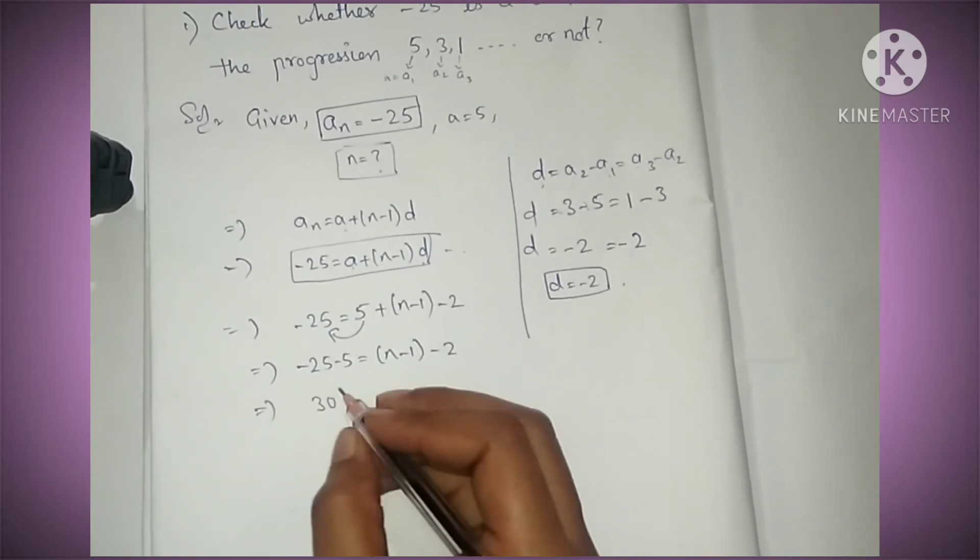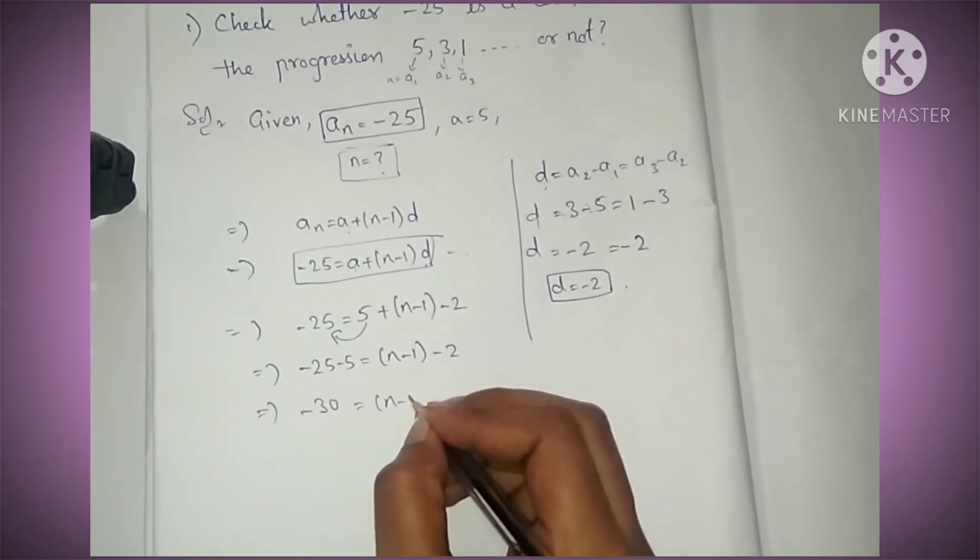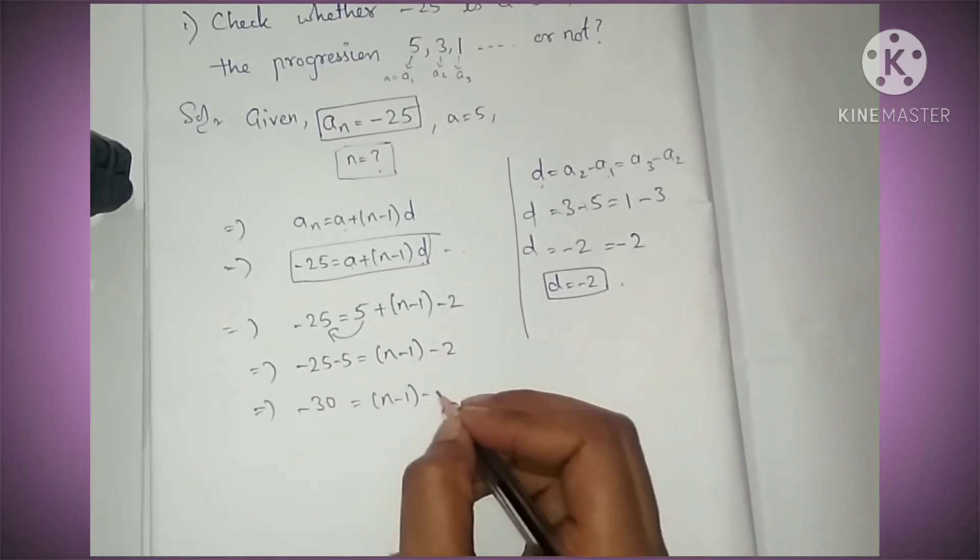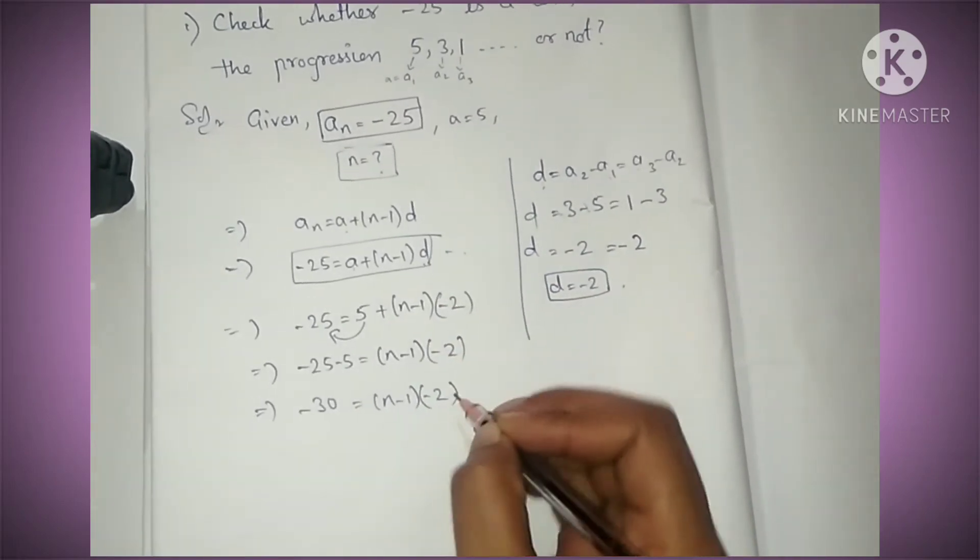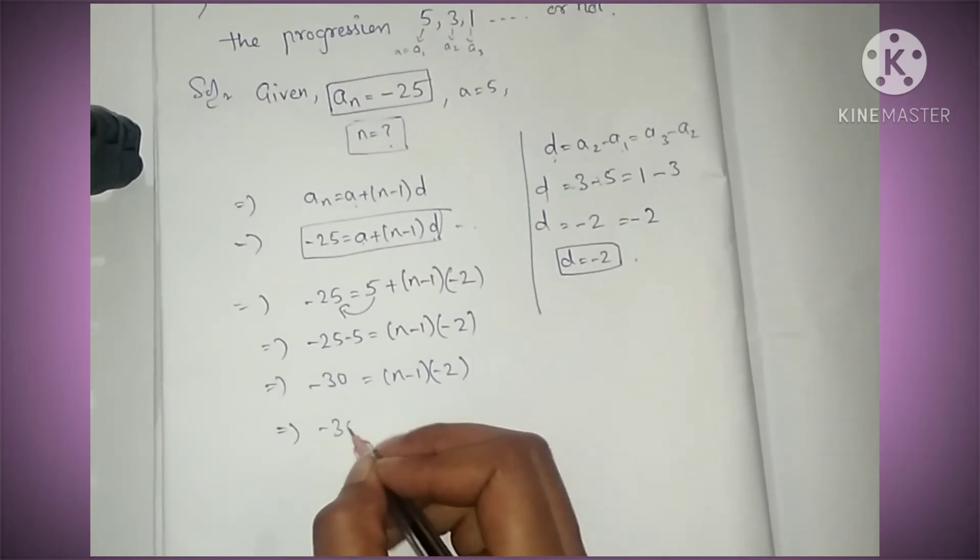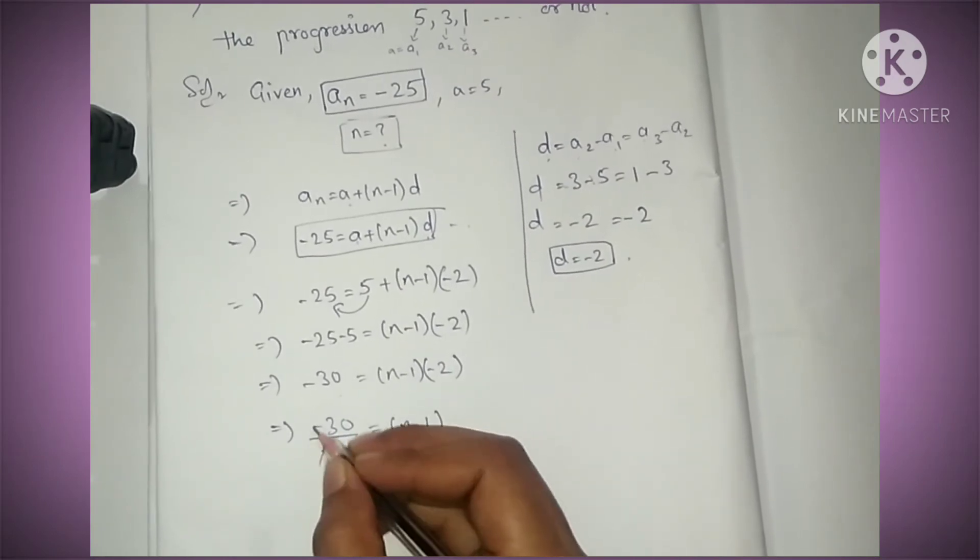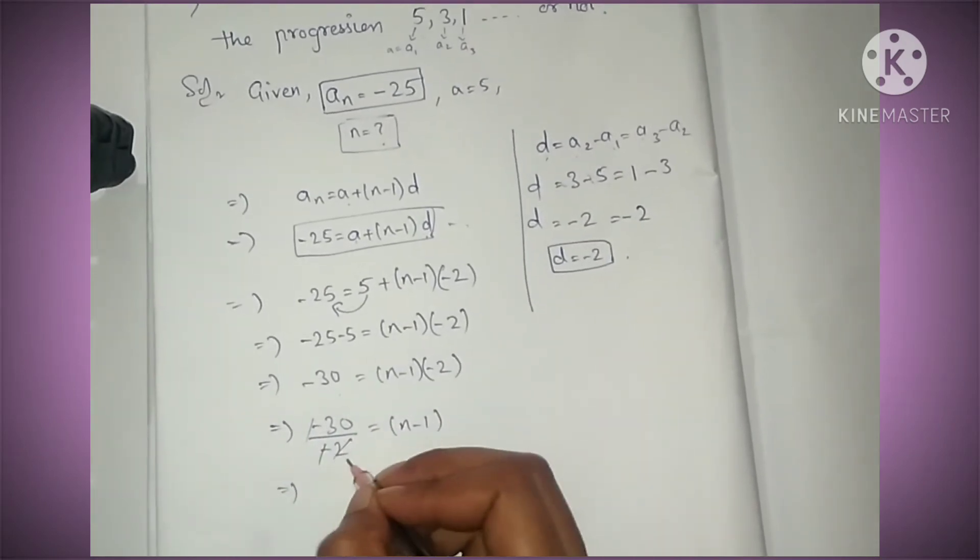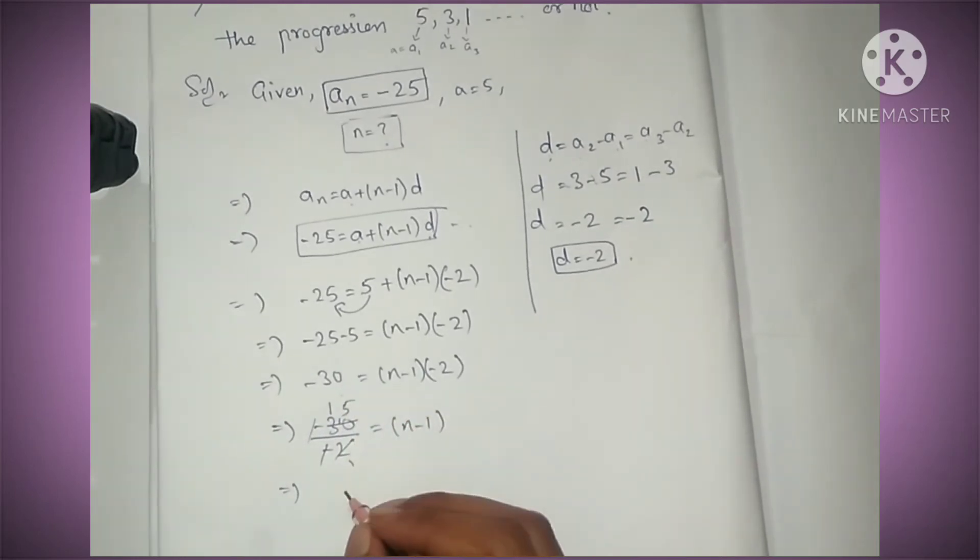-30, biggest number sign is minus. (n-1)(-2), d value is in bracket because it's -2. Now this multiplication can be sent to the other side: -30/-2 = n-1. Minus minus gets cancelled, 15 = n-1.